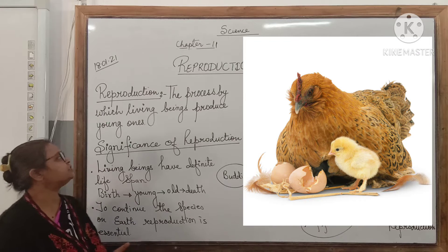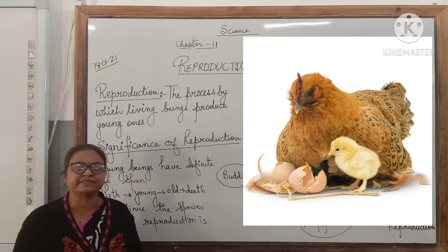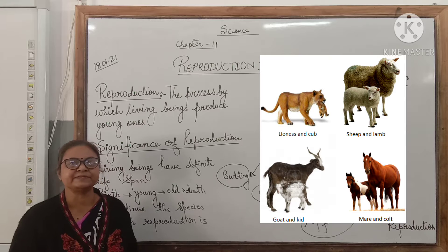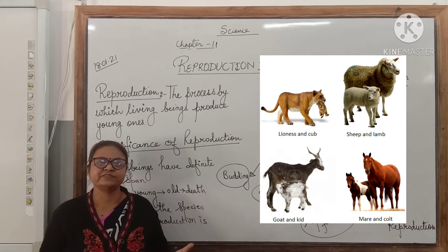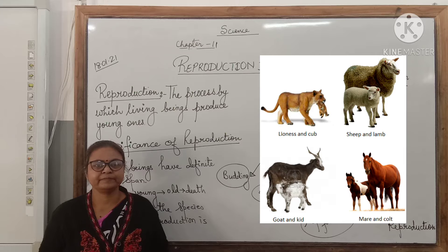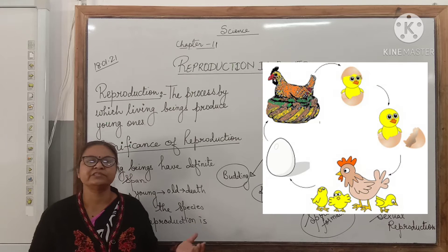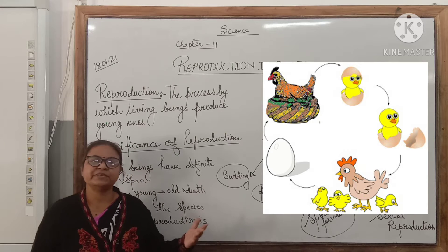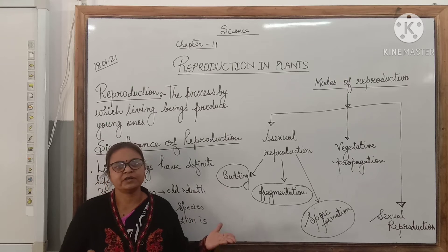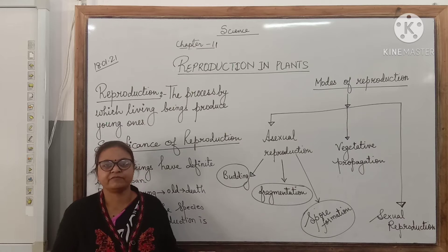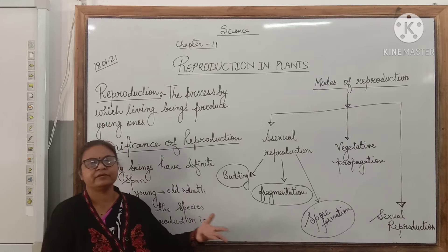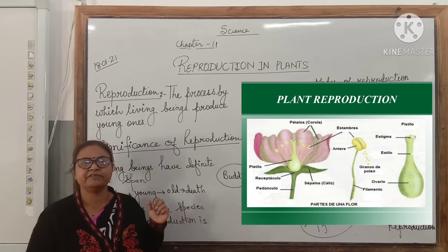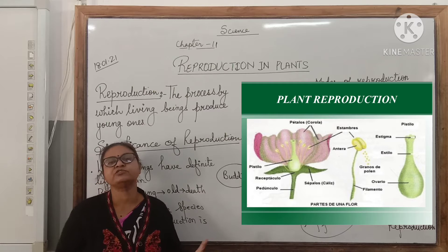Reproduction is the process by which living beings produce young ones. You must have seen the young ones of several different animals. A hen gives rise to chickens — the eggs of the hen hatch out into small chickens, which grow and reach the adult stage. You must have seen young ones of cows, buffaloes, and human beings. Even plants are living beings and they also show reproduction.